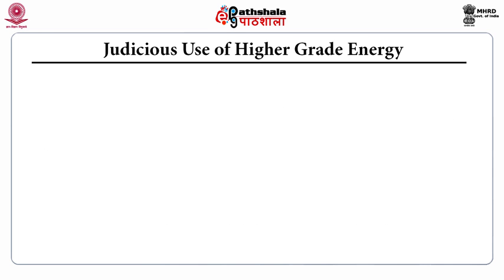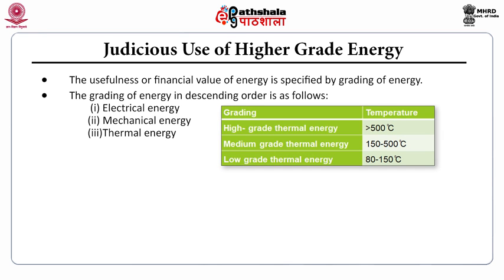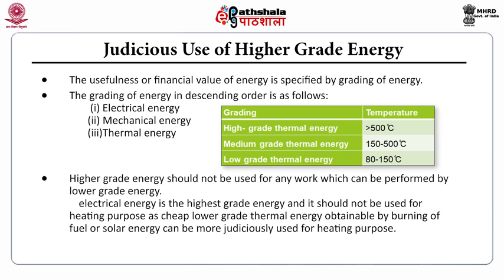The next principle is judicious use of higher grade energy. The usefulness or financial value of energy is specified by grading. The grading of energy in descending order is: electrical energy, mechanical energy, thermal energy. Higher grade energy should not be used for any work that can be performed by lower grade energy. Electrical energy is the highest grade and should not be used for heating purposes, as cheaper lower-grade thermal energy is obtainable by burning fuel or using solar energy.